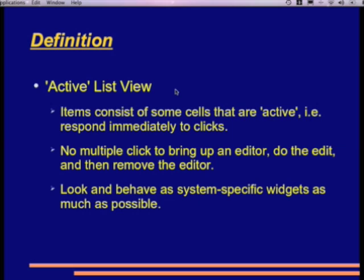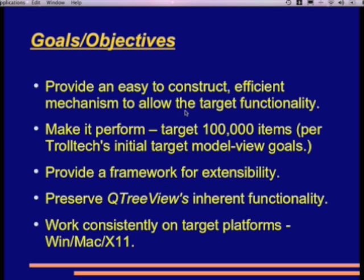QXListView provides active list functionality, and what that means is that the items consist of some cells that are active — that respond immediately to clicks. There is no multiple click required to bring up an editor to do the edit and then remove the editor. And finally, we want things to look and behave as system-specific widgets as much as possible. The goals and objectives were to provide an easy-to-construct, efficient mechanism to allow the target functionality to make it perform.